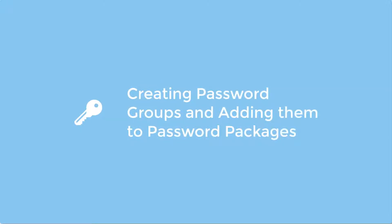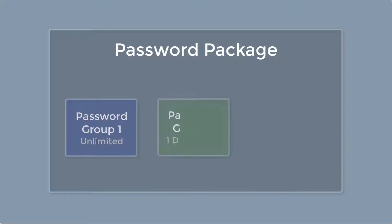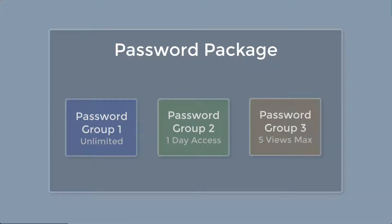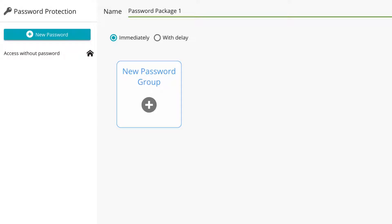To save your password package, simply click on the green save button below. With your password package created, you are now able to add password groups to it. Each password group can have different variables such as expiry period, amount of allowed views, and if it's valid for one or multiple videos. You could simply add one password group with a single set of parameters, or you could add multiple groups with different parameters.